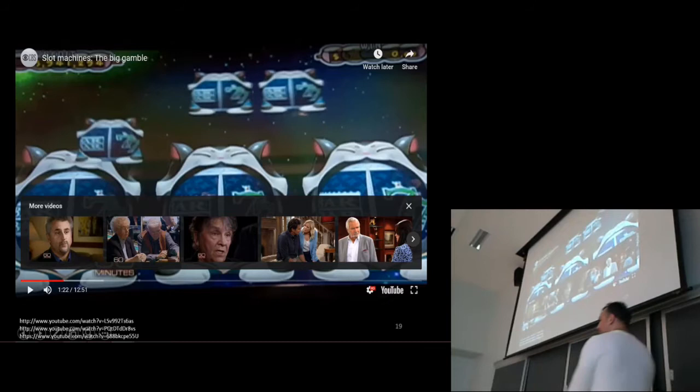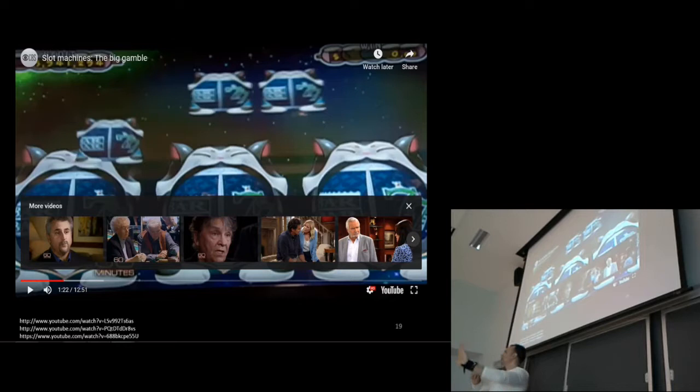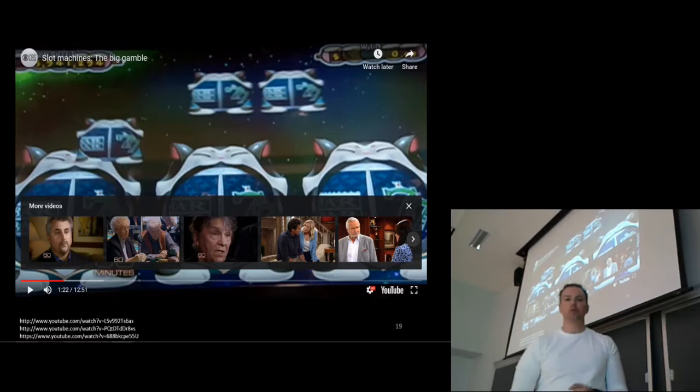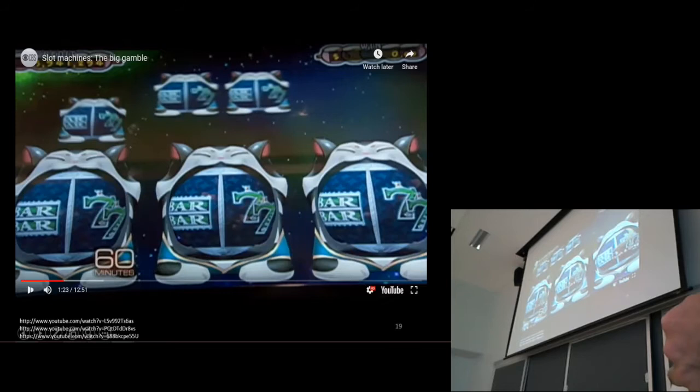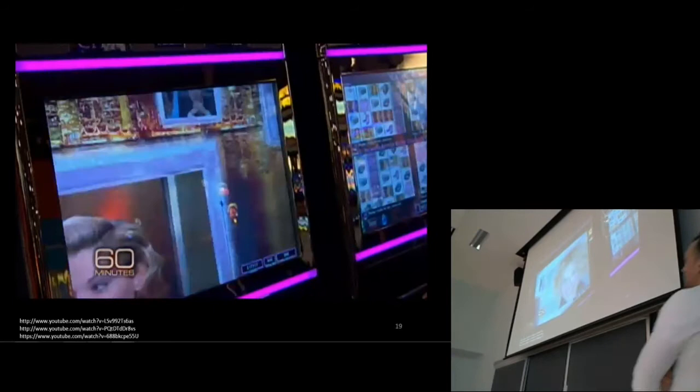This is what slot machines used to look like, where you pull the handle and hope for three of a kind. This is what they look like today. You notice the old-time slot machines had mechanical tumblers that went around, one would stop, then another, then another. In new slot machines, everything happens on a computer screen, but the screen displays things the same way. We're going to see why that is done.